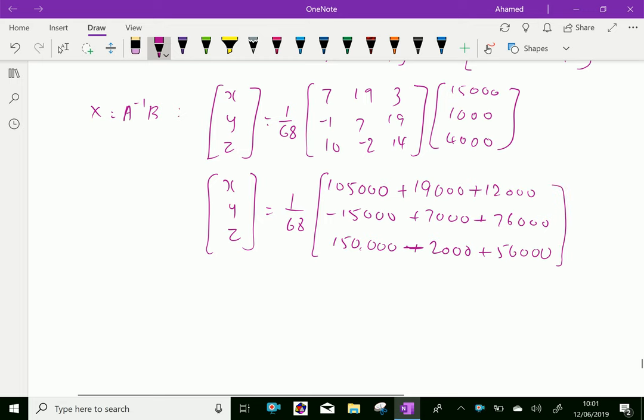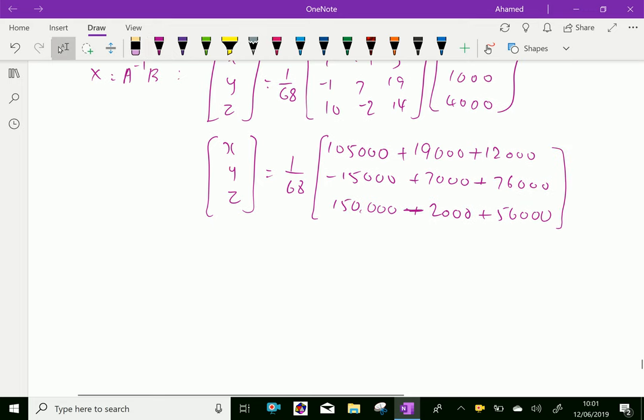Now, by adding the elements of rows and divide by 68, we'll get the simplification. Here, first is 2,000, second comes 1,000, third becomes 3,000.